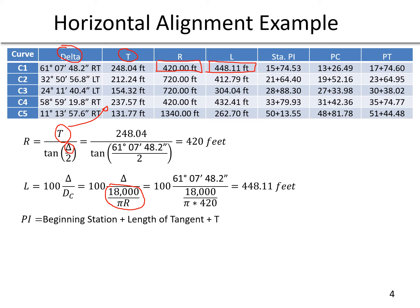Next we calculate the station of the PI. For the first one, we start with the beginning station — station 11 plus 50, which was given. Then we add the length of the tangent from the tangent table, and also the T from this curve. So: 11 plus 50, plus the tangent length of 176.49, plus T of 248.04, gives us a PI station of 15 plus 74.53.